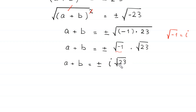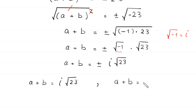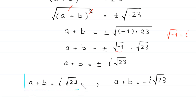So we get two values of A plus B. The first solution is A plus B equals positive i times root 23, and the second is A plus B equals negative i times root 23. Both of these solutions are complex numbers.